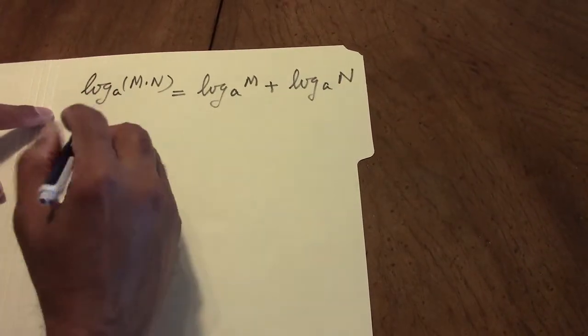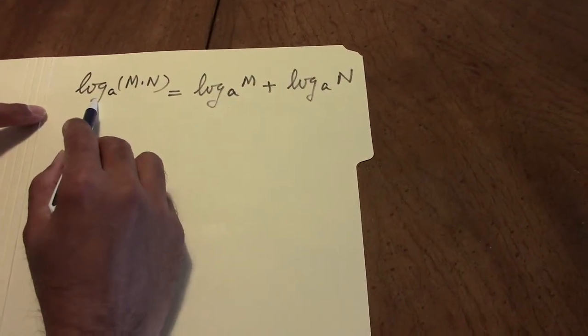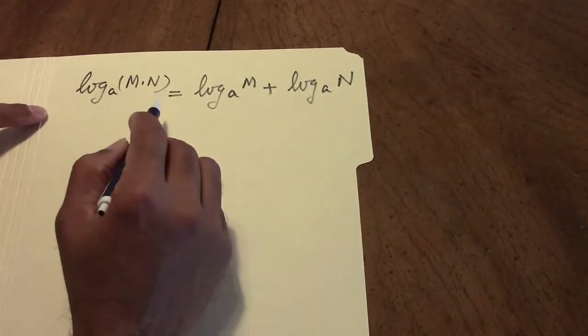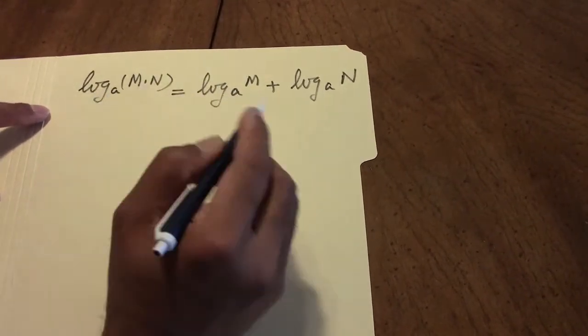Stated differently, the logarithm of the product of two numbers is equal to the sum of the logarithms of the numbers.